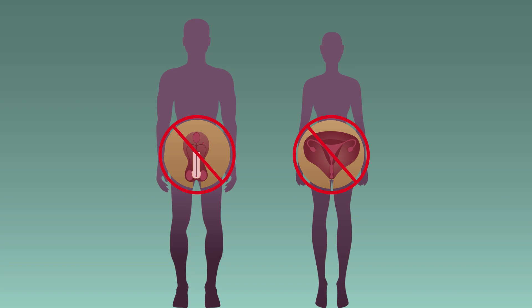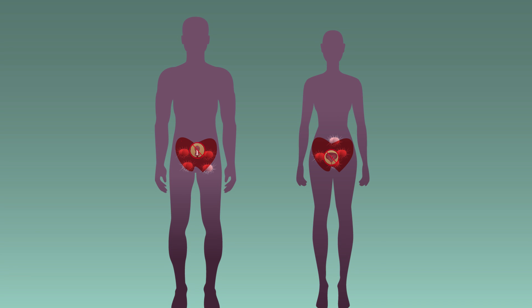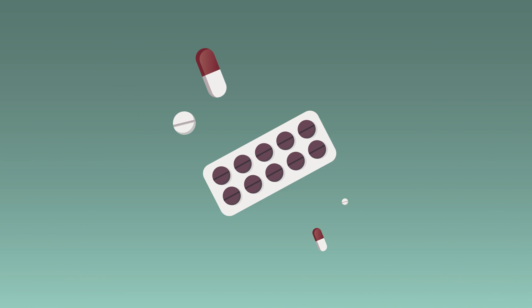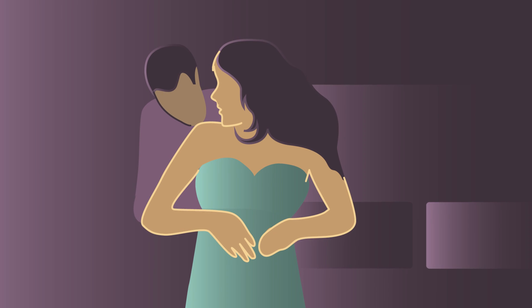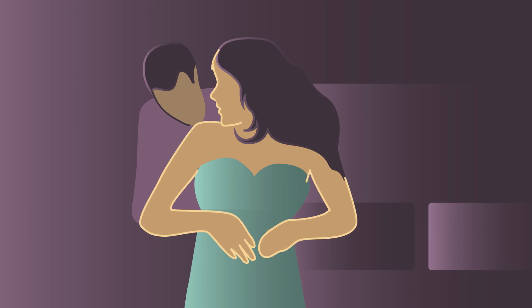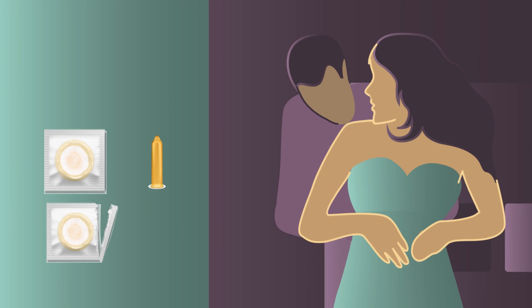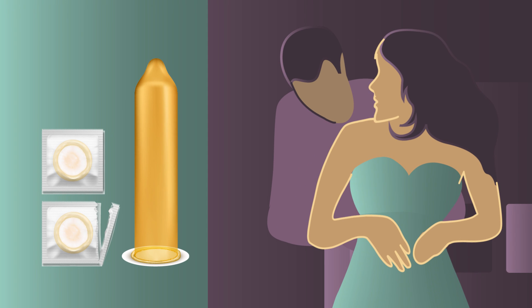This is why it is very important to get checked by a doctor as soon as a person gets symptoms, so it can be treated with a course of antibiotics. Its spread is reduced by using a barrier method of contraception, such as condoms.